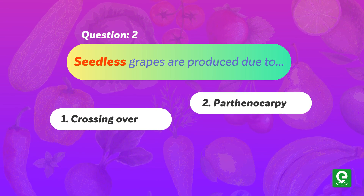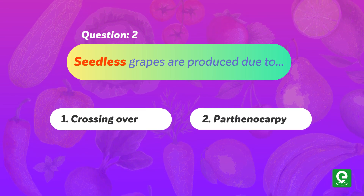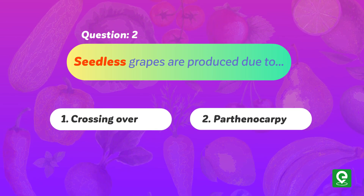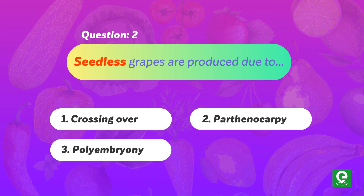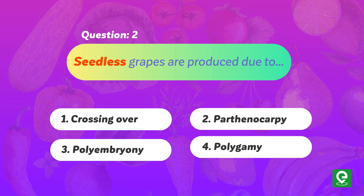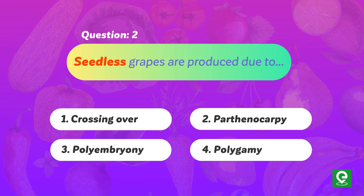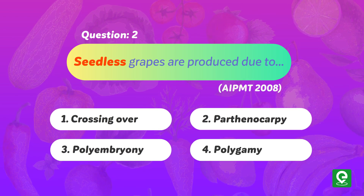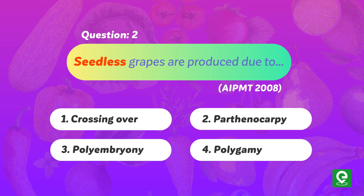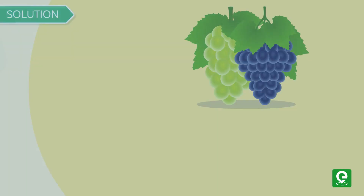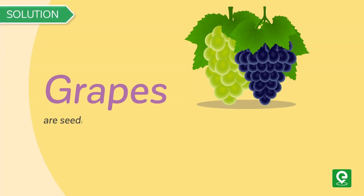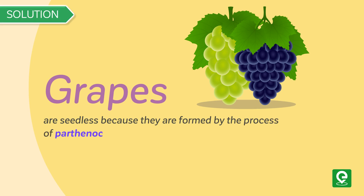Question two, asked in AIPMT 2008: Seedless grapes are produced due to — (1) crossing over, (2) parthenocarpy, (3) polyembryony, (4) polygamy. Solution: Grapes are seedless because they are formed by the process of parthenocarpy. Hence option two is correct.